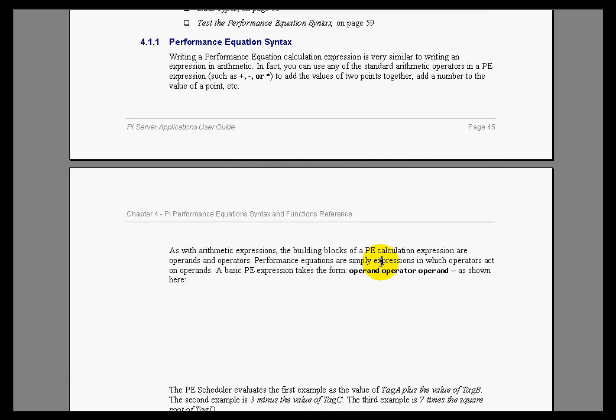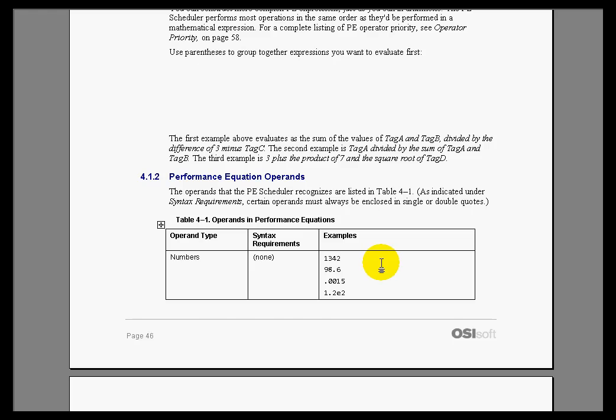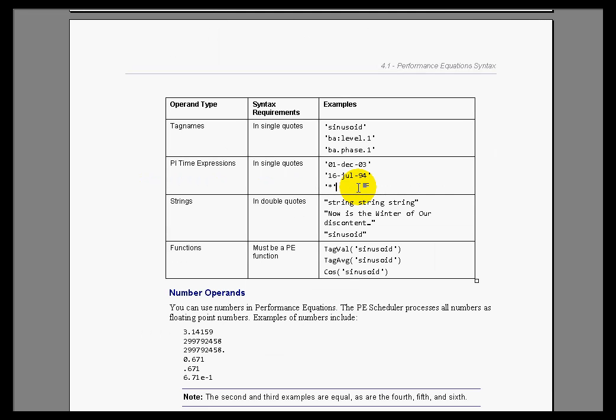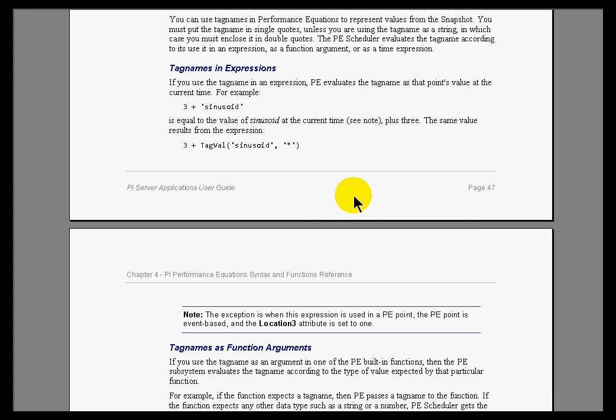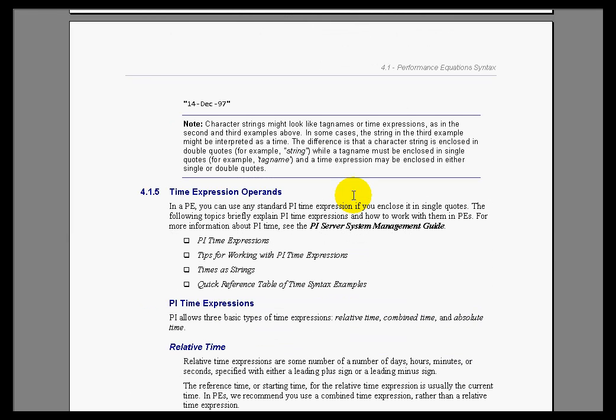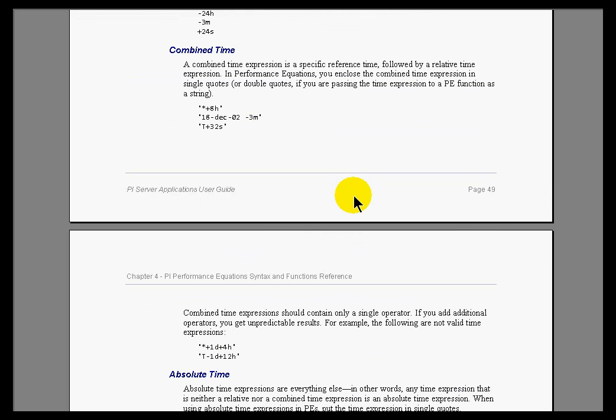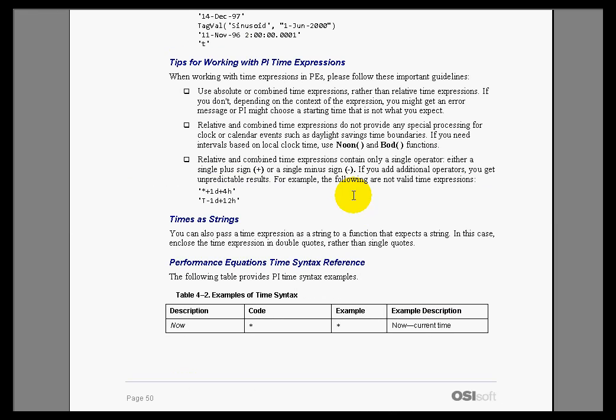So we describe the syntax used by performance equation. What do we do to express strings and digitals? What operands do we support? And what functions do we use? So you'll see a whole list of the functions available if you go down through this book. And we'll discuss some of those functions later on.